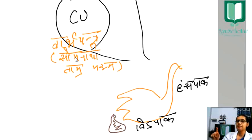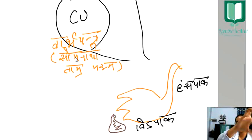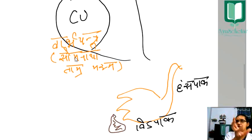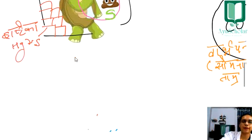Hansapak Yantra is used for Vidpak. So to summarize: Garbha Yantra is for Somnathi Tamrbhasma (remember copper), and Hansapak Yantra is for Vidpak (remember his stool shown in the figure).